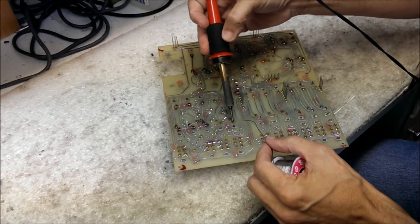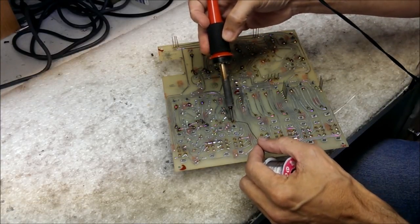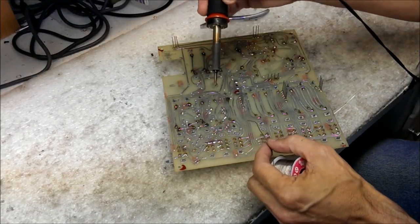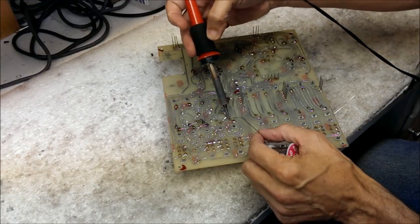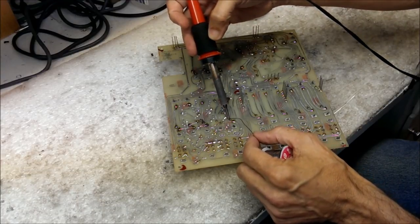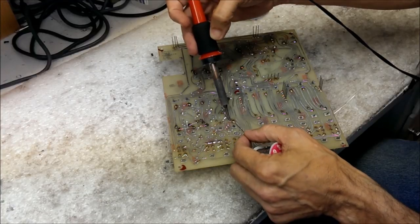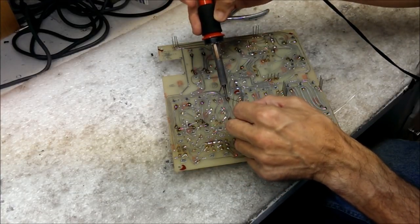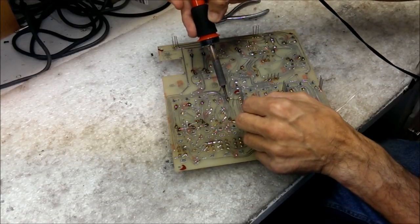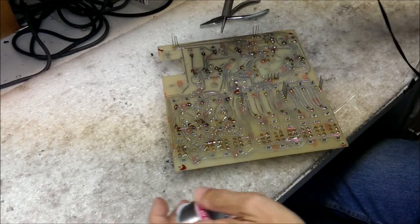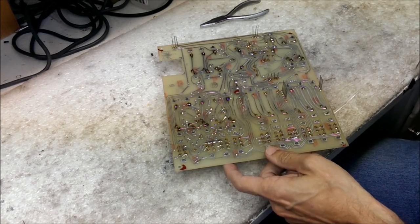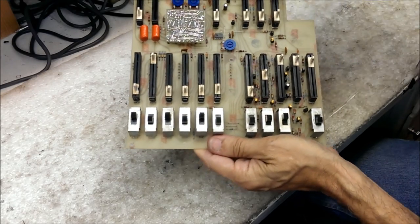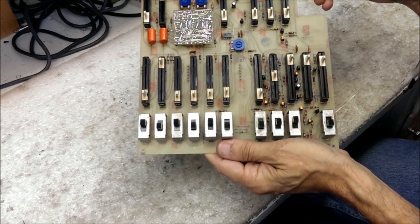And now we'll just solder the three pins back into place. So we'll put the soldering iron against the pin and against the trace on the board. Get everything hot and then apply the solder. One. Two. And three. The board is, or the slider is back on the board. It's working. It's ready to go.